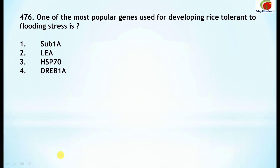Question 476: one of the most popular genes used for developing rice tolerant to flooding stress — the correct answer is Sub1A. Sub1A is the gene that makes rice tolerant to flooding stress.